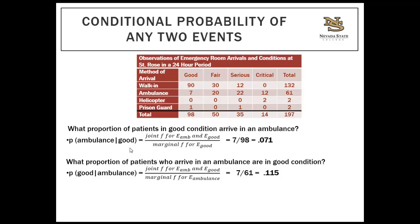What proportion of patients in good condition arrive in an ambulance? The joint frequency for good condition and ambulance is 7. We're only looking at those in good condition — 98 patients total. So 7 divided by 98 equals 0.071 — or 7.1% of patients in good condition arrive in an ambulance.